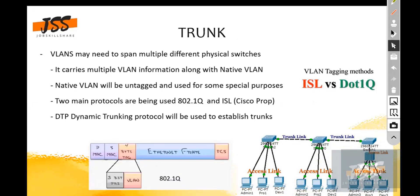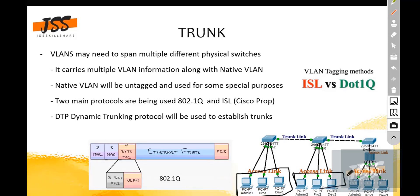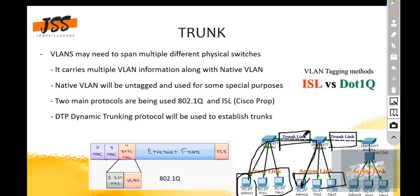Looking at the diagram, we have multiple switches with access links connected to host machines. For hosts to communicate across switches — for example, Admin 1 communicating with Admin 2 — the traffic passes through trunk links between the switches. Communication will only pass through if a trunk link is configured; without it, no communication will get through.